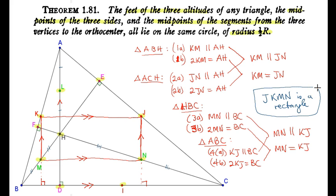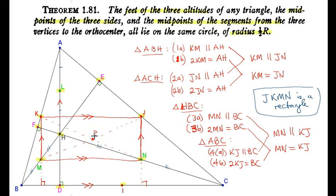Rectangles are cyclic, so we have already proved that four of our points — J, K, M, N — are concyclic. The center of that circle is the midpoint of the diagonals. Drawing diagonal KN as a dotted line, its intersection with diagonal JM gives us the center of our circle.